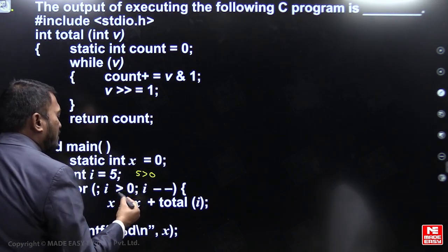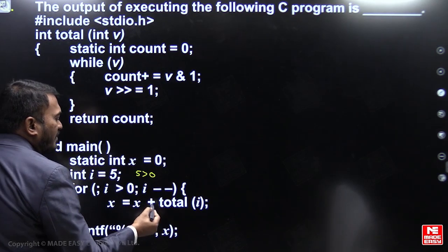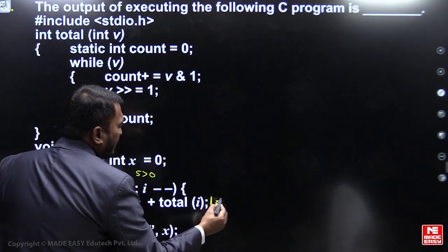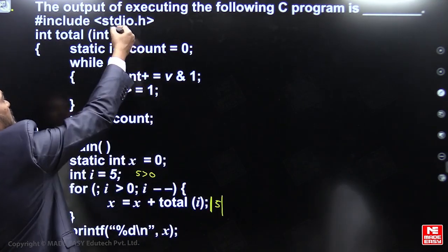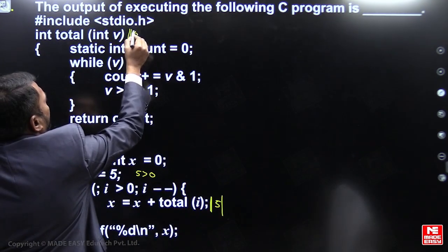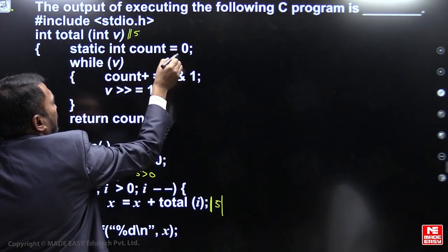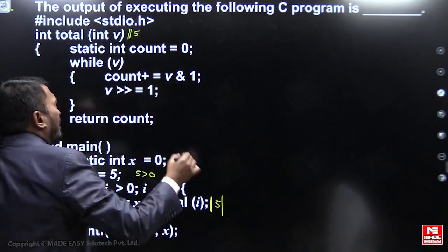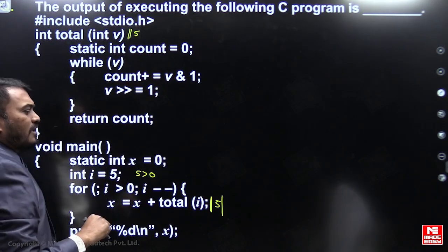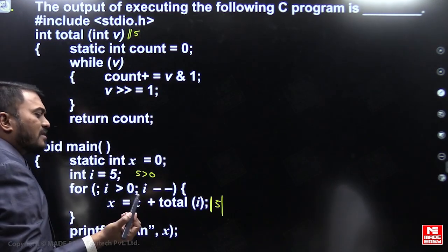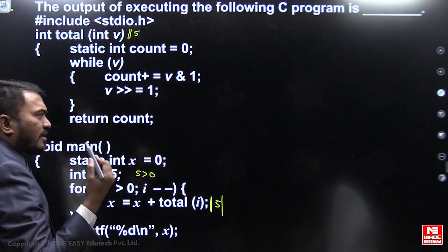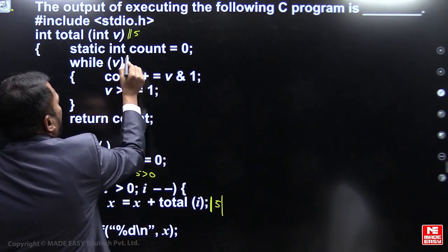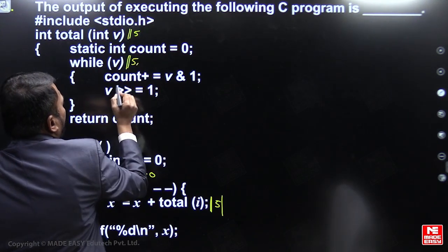x equal to x plus total(i), so you pass value 5 into the function, received into parameter v. Static integer count — since it's static, memory is already allocated at compile time, so at runtime you simply skip that declaration. While v: v is 5.